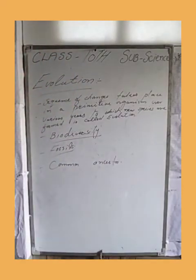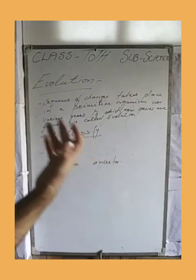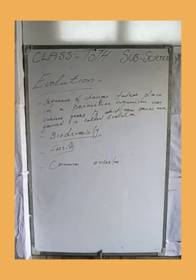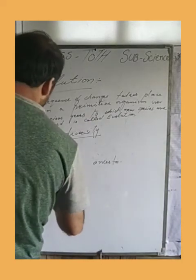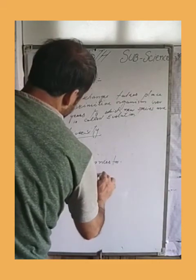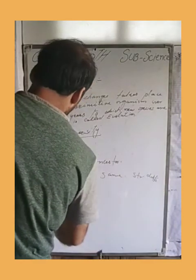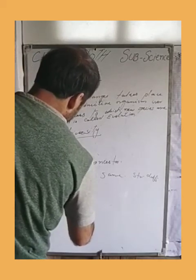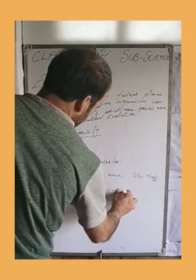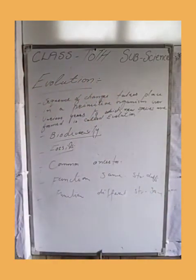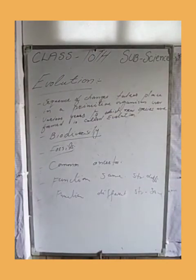If we can see that some organisms have a different body structure, but one specific part is the same — the composition of the structure is the same but the function is different, or the function is the same but the structure is different. These organisms share a common ancestor.